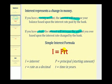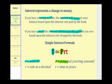The simple interest formula is I equals P times R times T, where I is the interest, P is the principal or starting amount, R is the rate expressed as a decimal, and T is time expressed in years. Let's go and take a look at some examples.